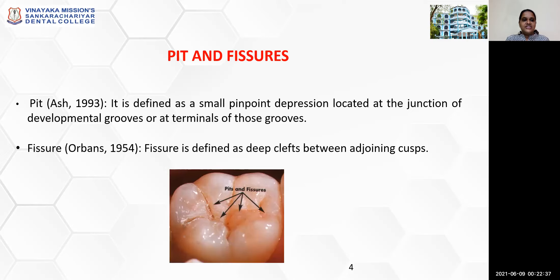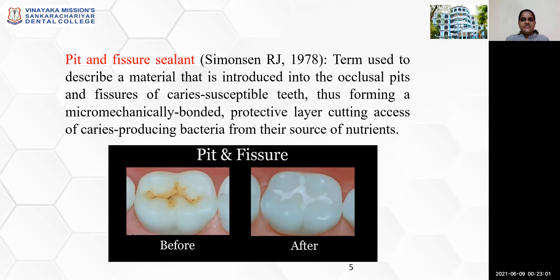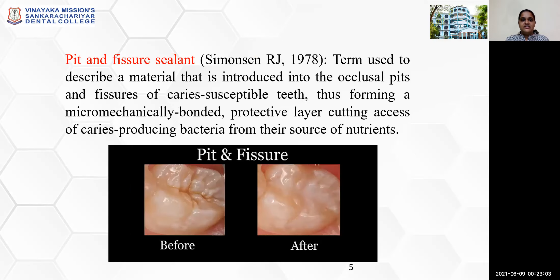The definition of pit was given by Ash in 1993. It is defined as a small pinpoint depression located at the junction of the developmental grooves or at the terminal of those grooves. Fissure definition was given by Orbanes in the year 1954, who defined fissures as deep clefts between adjoining cusps.